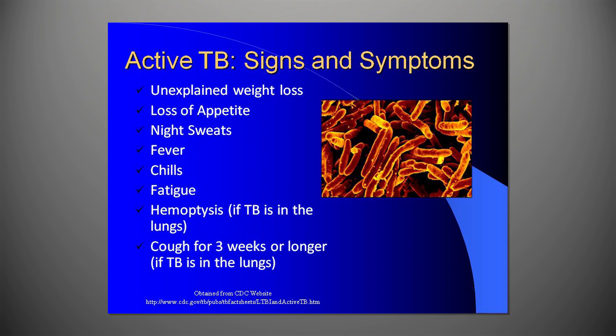The common signs and symptoms of active TB disease include unexplained weight loss, loss of appetite, night sweats, fever, chills, fatigue, hemoptysis, and a cough for three weeks or longer if the TB is in the lungs. However, someone could be diagnosed with active TB without showing these symptoms.